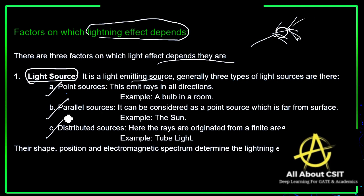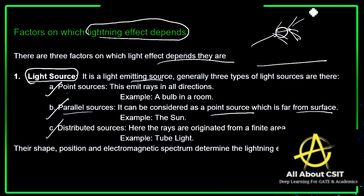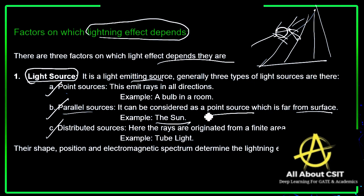A parallel source can be considered as a point source which is far from the surface. The light-emitting object is far from the surface and reflects light toward it. An example is the sun — a parallel source is a point source that is very far from the surface.